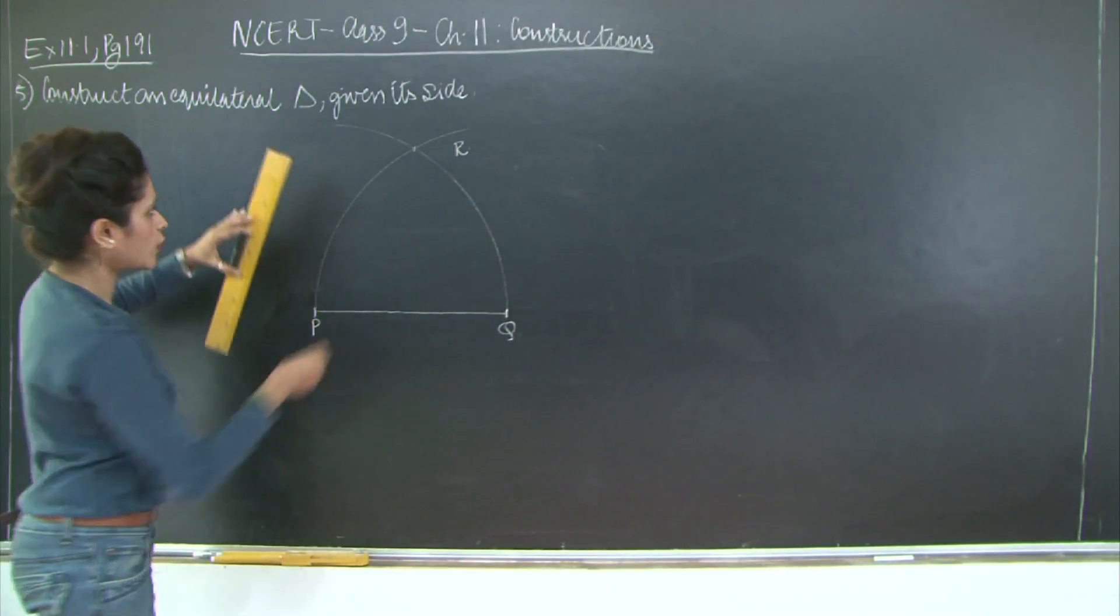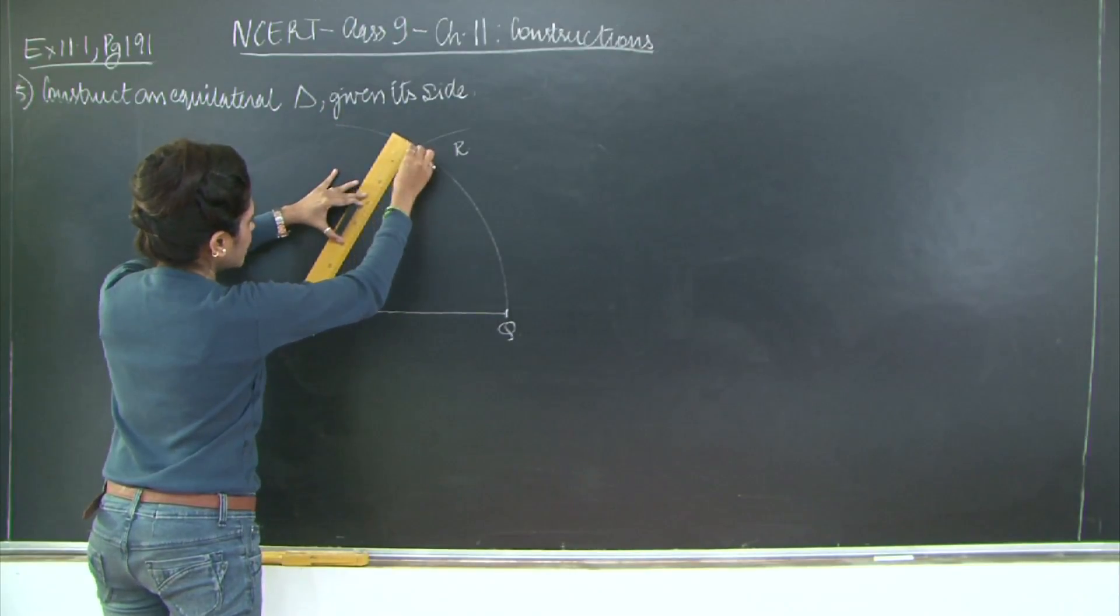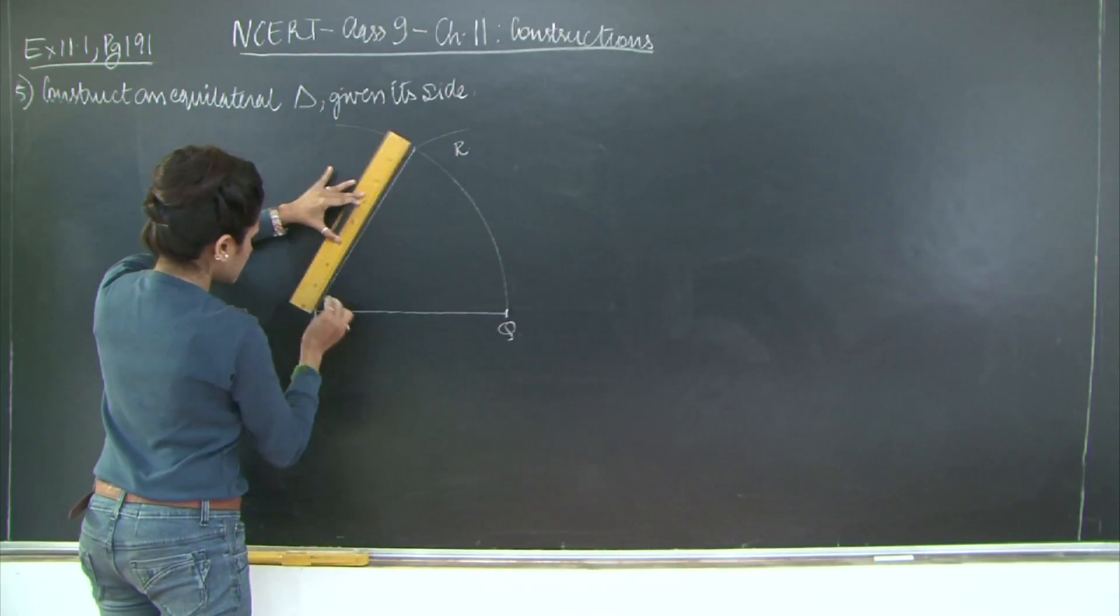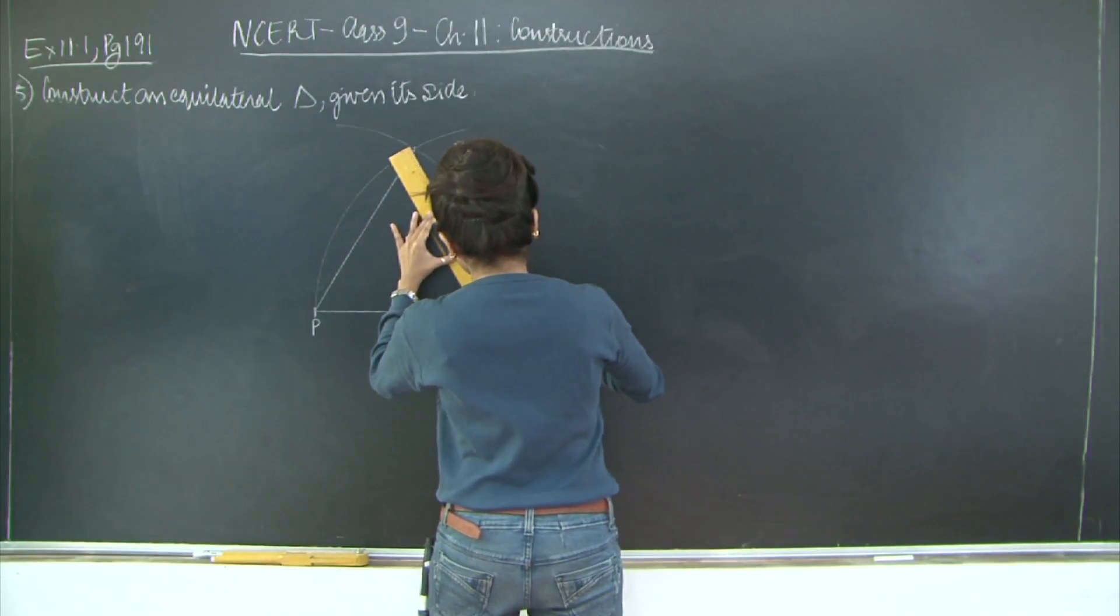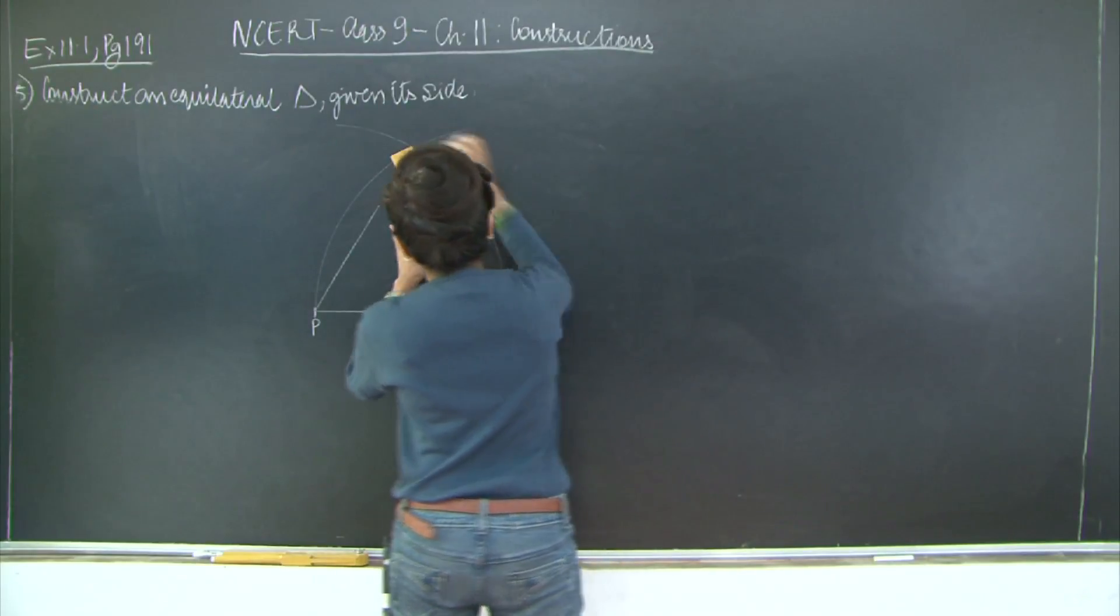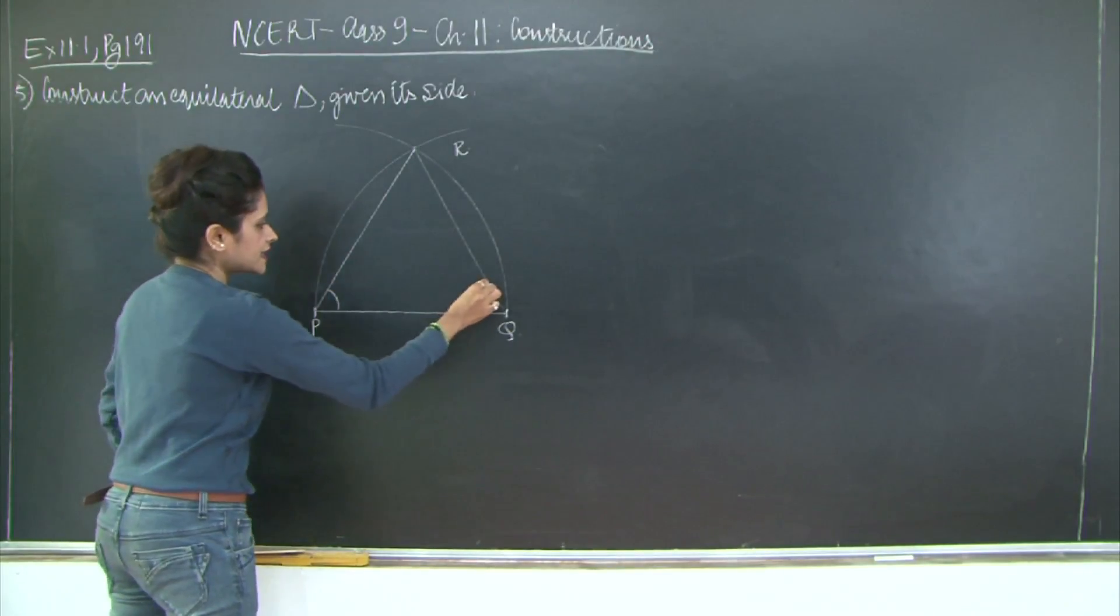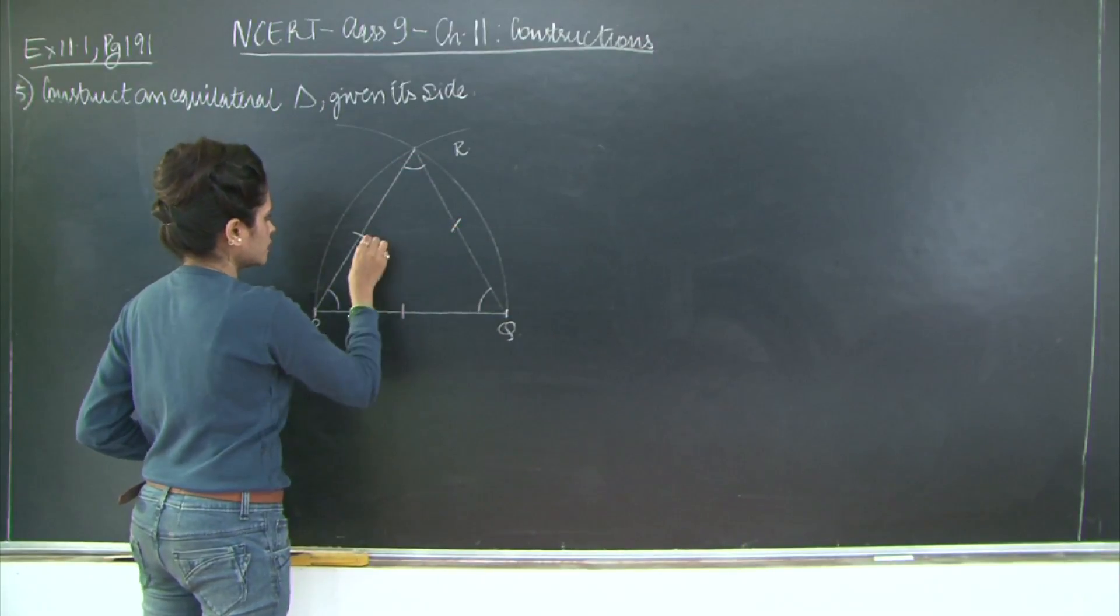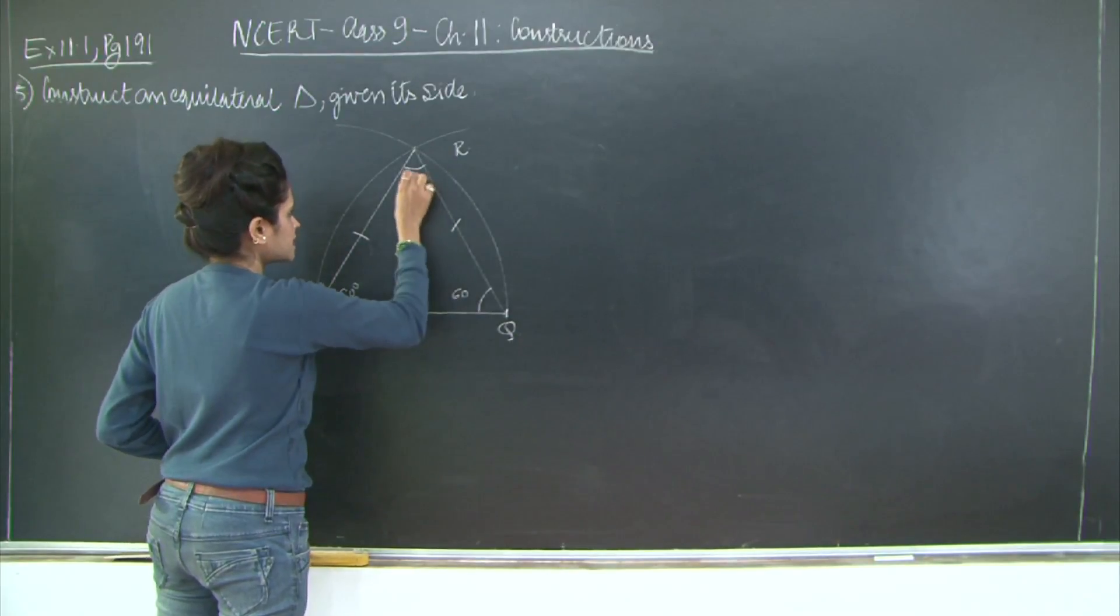So I am going to draw their corresponding chords. I am going to join R to P and R to Q. So this triangle so formed, RPQ, is an equilateral triangle. Each of these angles is equal to 60 degrees and all the sides are equal.